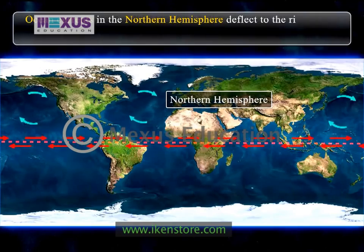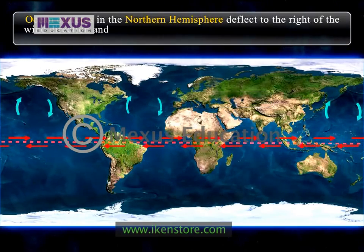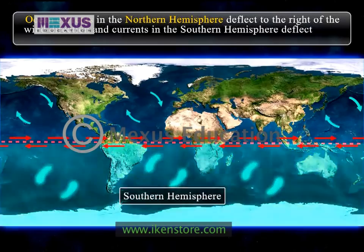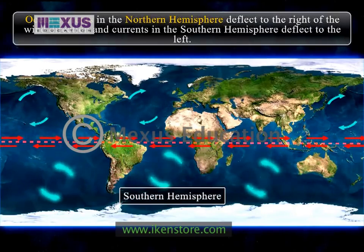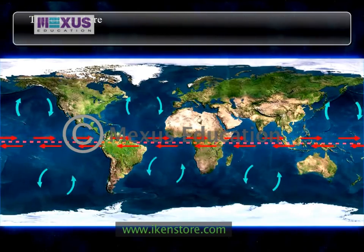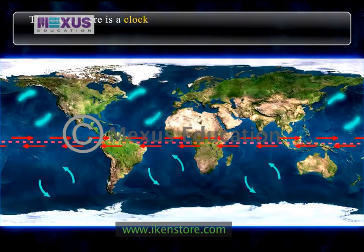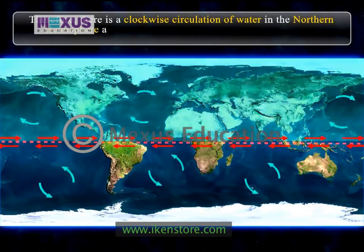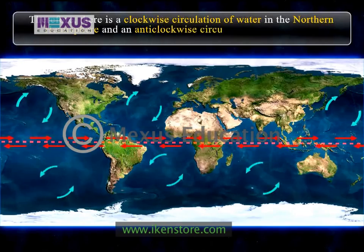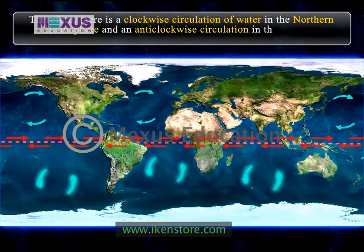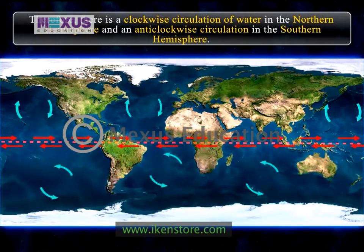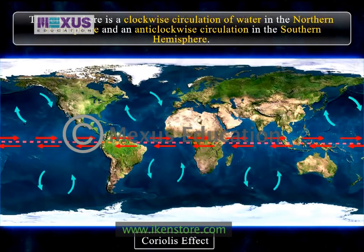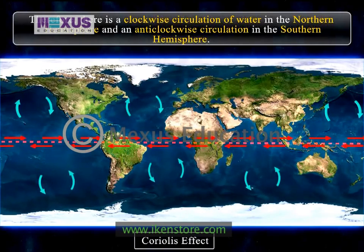Ocean currents in the northern hemisphere deflect to the right of the wind direction, and currents in the southern hemisphere deflect to the left. Therefore, there is a clockwise circulation of water in the northern hemisphere and an anti-clockwise circulation in the southern hemisphere. This is the Coriolis effect, caused due to the rotation of the Earth.